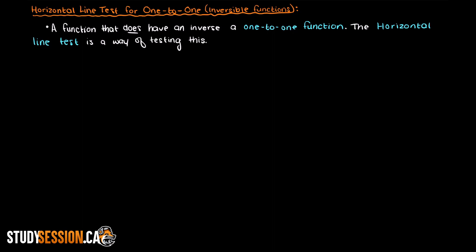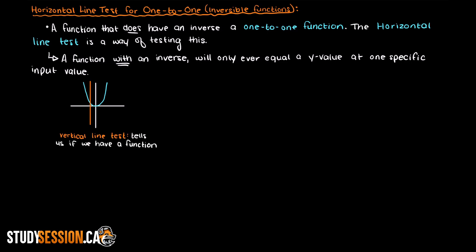So what does a one-to-one function look like? Well, it is quite simple. A one-to-one function, a function with an inverse, will only ever have a single y value for any given input. Just like our previously mentioned vertical line test to test whether we had a function or not, this horizontal line test will tell us if our function has an inverse or not.